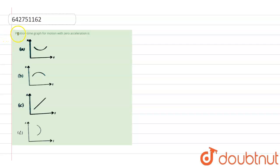The question says that the position-time graph for motion with zero acceleration is - so we have to find out what will be the position-time graph when the acceleration is zero.